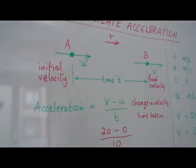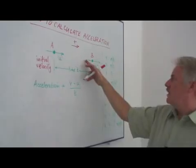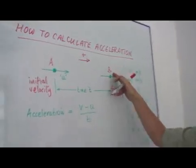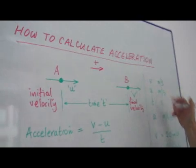Here I have an object at point A, and this object is moving to the right to a point B. We'll call this direction the positive direction.